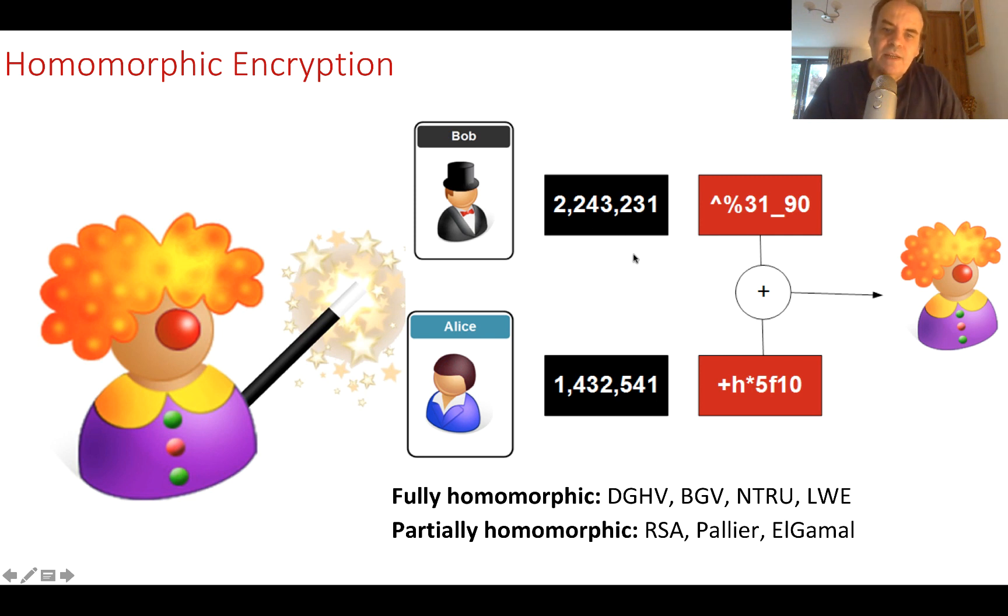So in this case, we have Bob, and he has a value, and so has Alice. They cipher them, and then we can add them together, and then we can decrypt.